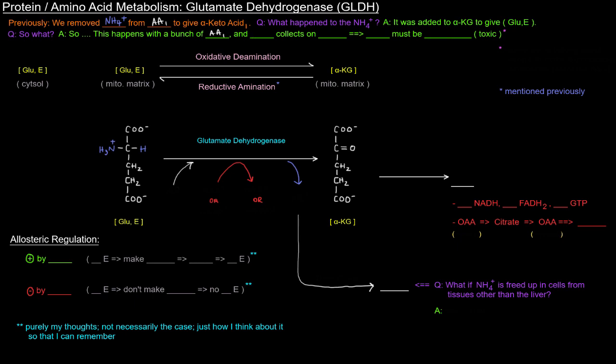What happens is that the NH4+ collects on glutamate. If we're continually trying to get amino acids ready to be oxidized, we're going to get a bunch of that NH4+ on glutamate. Basically we're collecting a bunch of NH4+, and it must be excreted because it is toxic.